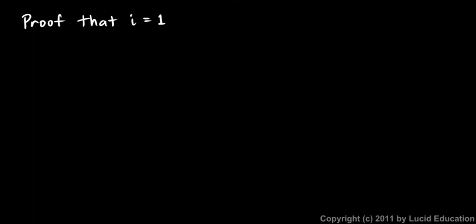I received a question recently across the internet about a proof that i is equal to 1. i, the imaginary unit, is simply equal to 1. And I was asked if I could resolve the problem in the proof, because i is obviously not the same thing as 1. I think I at least have some thoughts on the matter, so let me start by showing you the proof.